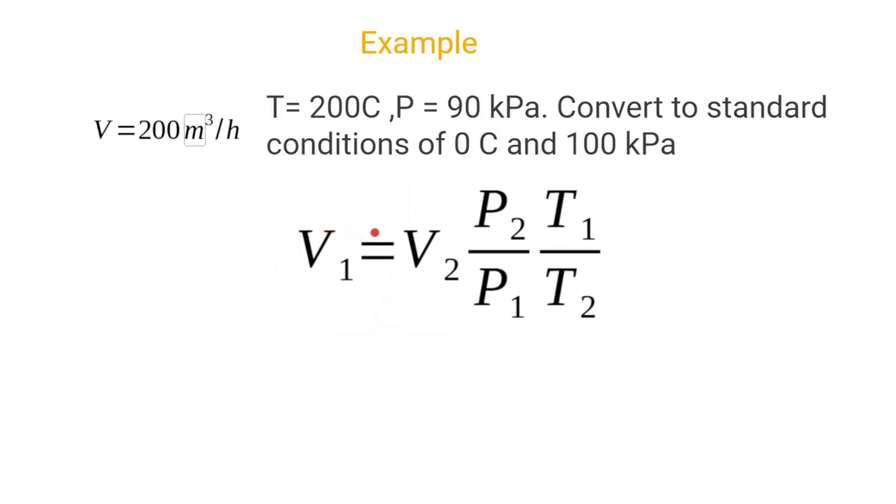V1 will be our normal condition that we'll be calculating. V2 will be the condition that we measured, as well as P2 and T2. P1 will be 100 kilopascals and T1 will be 0 degrees Celsius. But as this comes from the ideal gas law, T1 and T2 is to be in Kelvin.